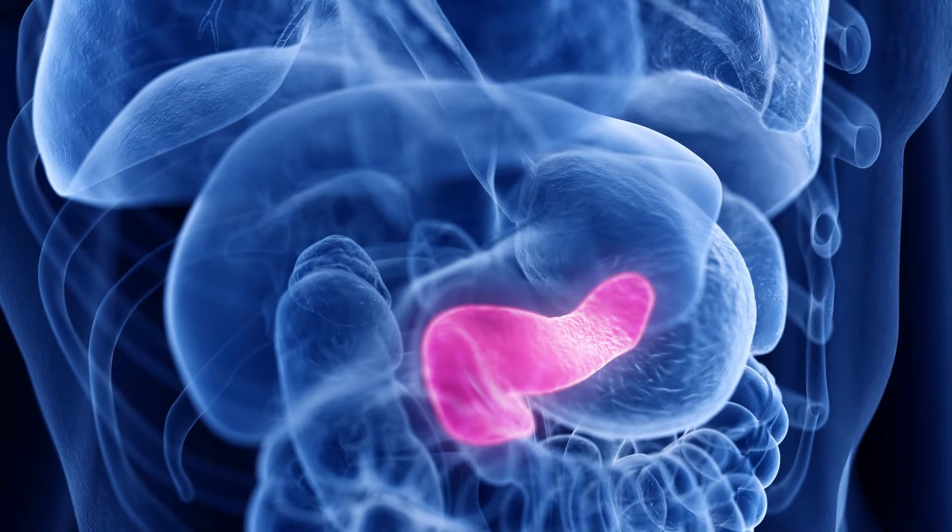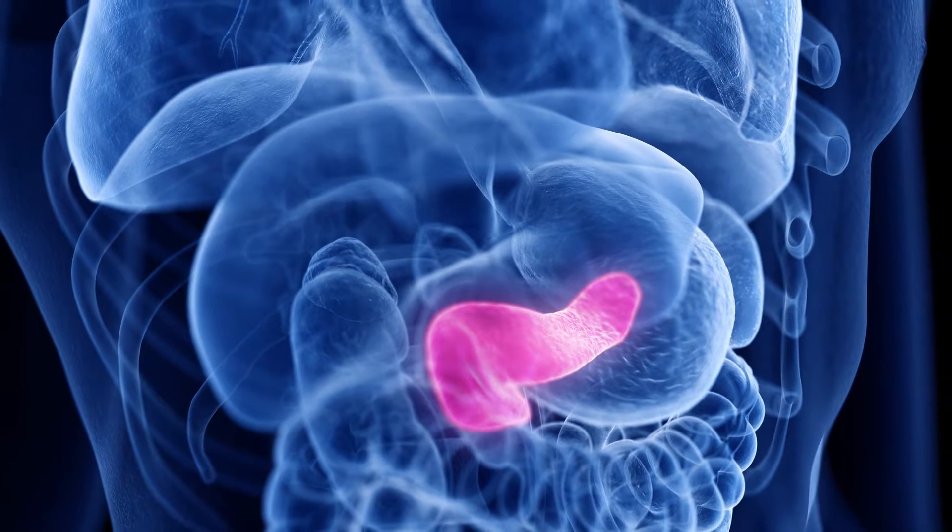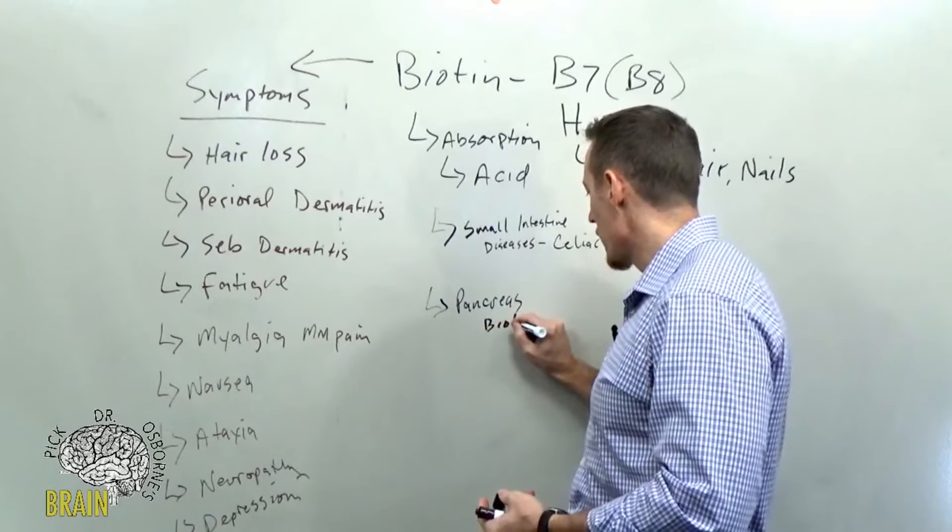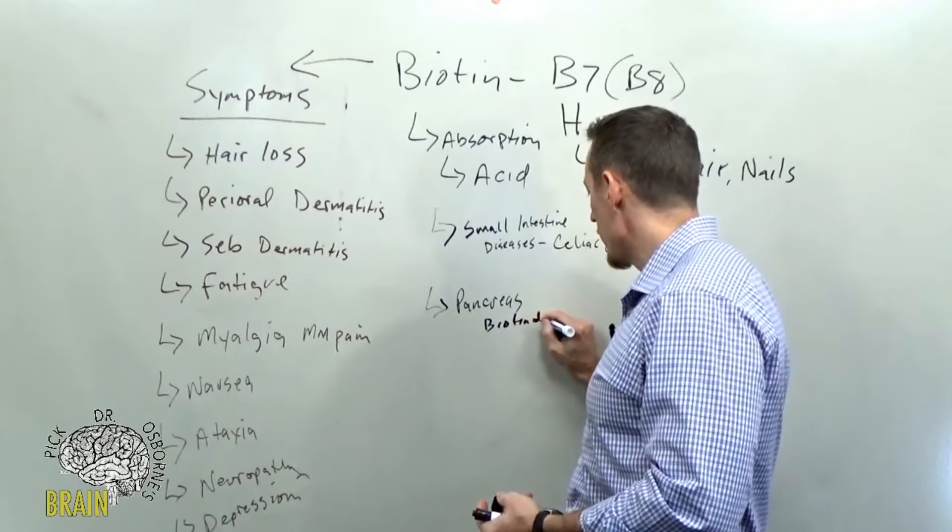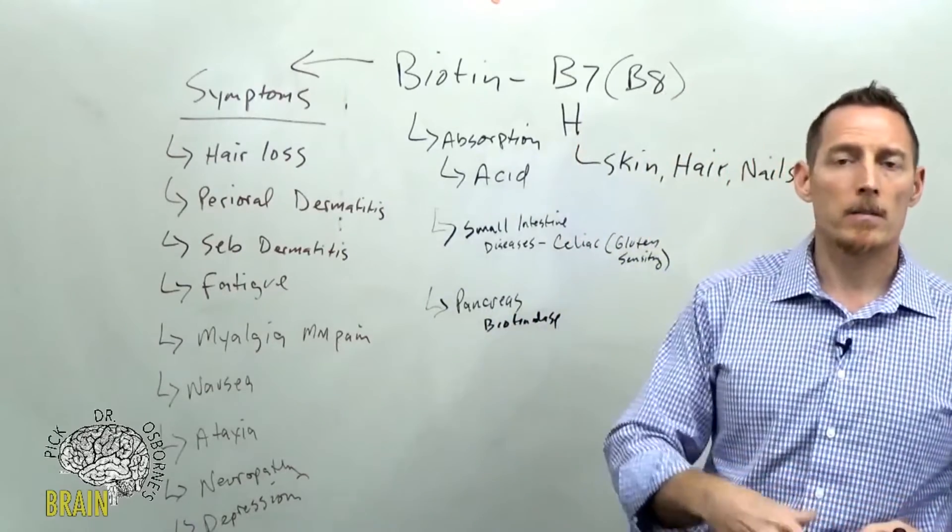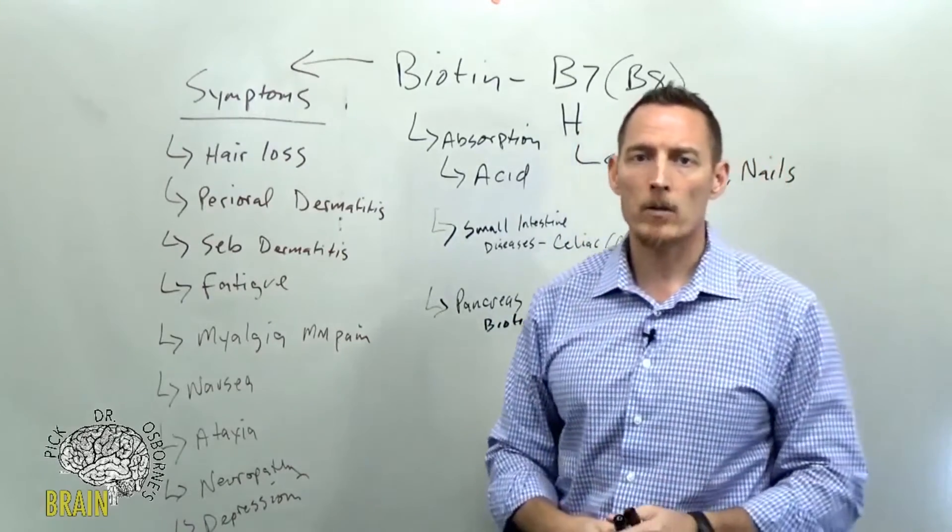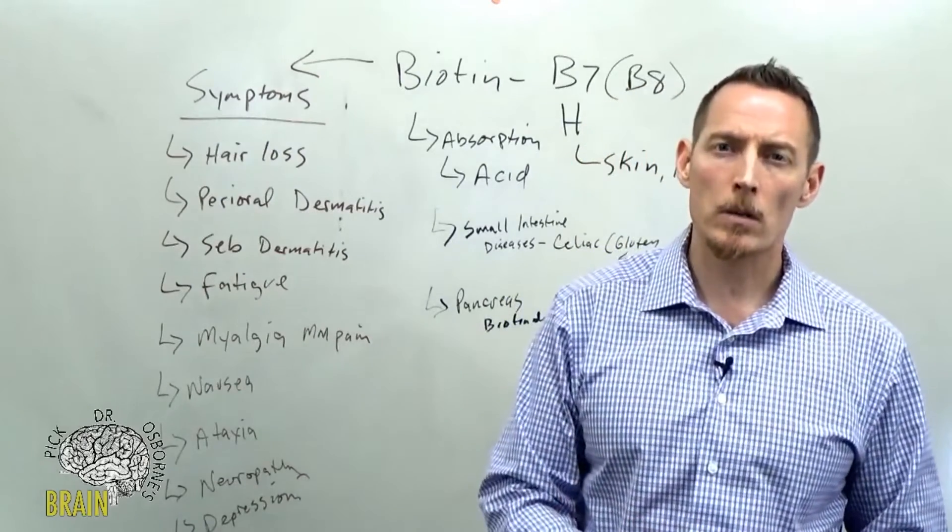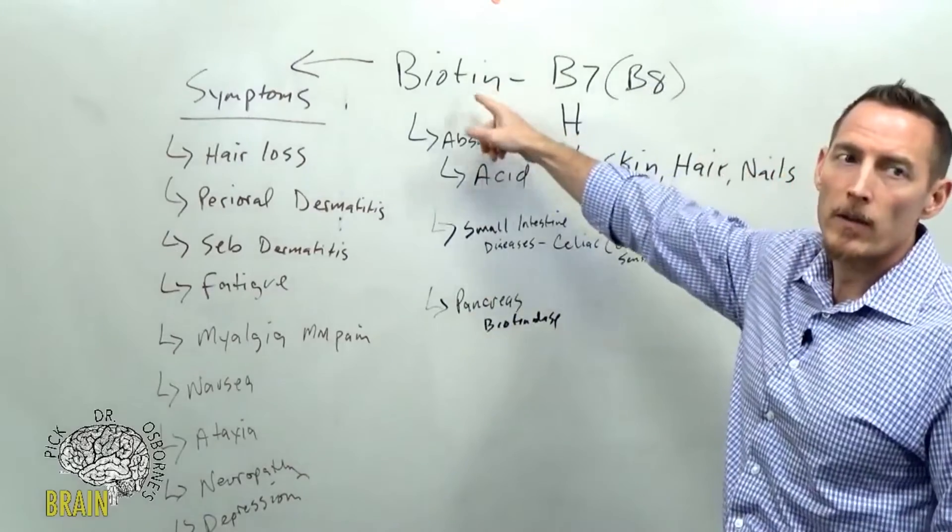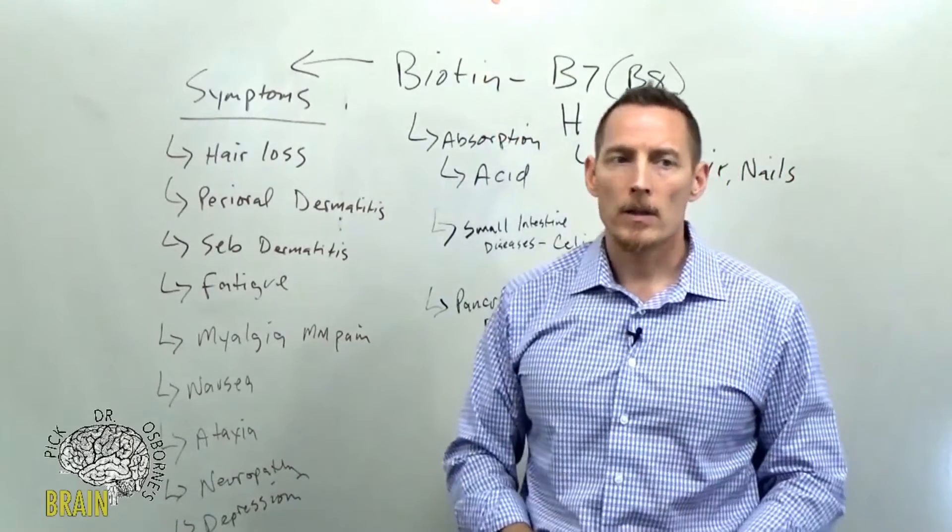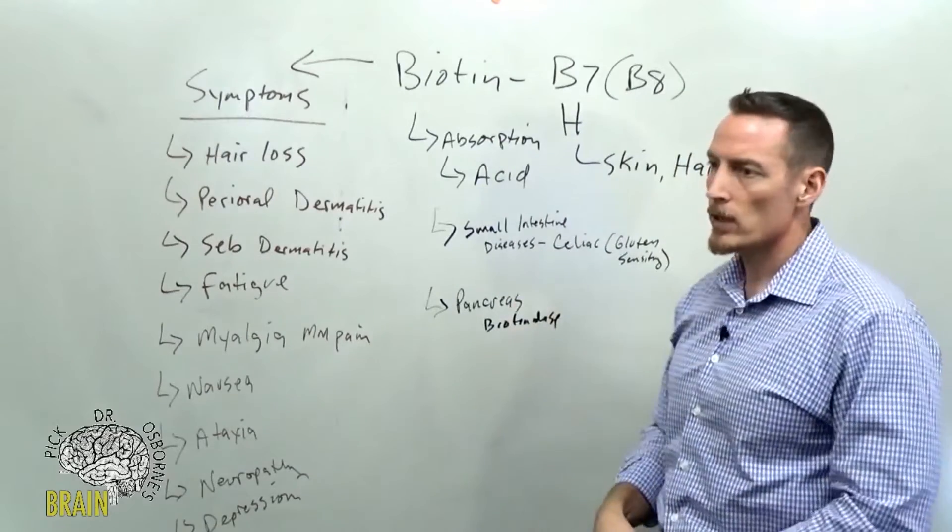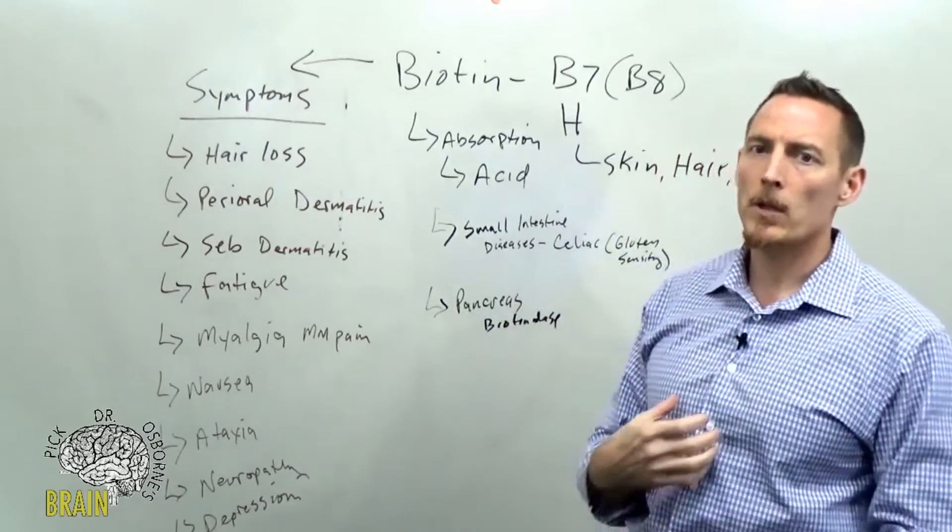The pancreas produces a substance called biotinidase, which aids in biotin absorption. So if you've got pancreatic insufficiency—maybe you've gone to the doctor and been told you have pancreatitis or pancreatic insufficiency problems—this might put you at risk for developing a biotin deficiency. If you've got an inflammatory bowel issue like celiac disease, but celiac is not the only one.